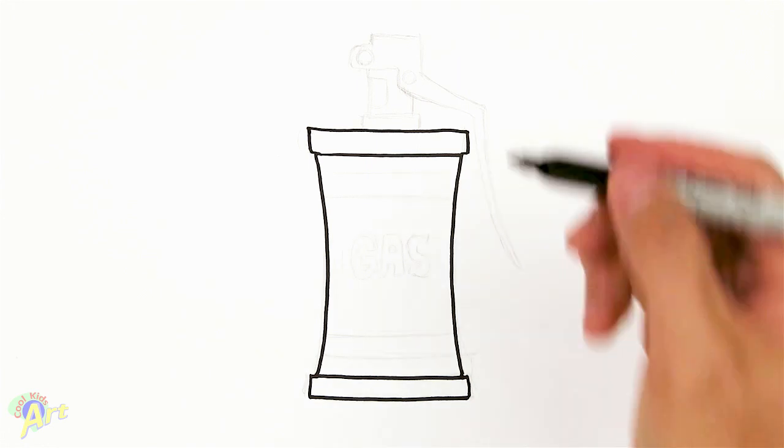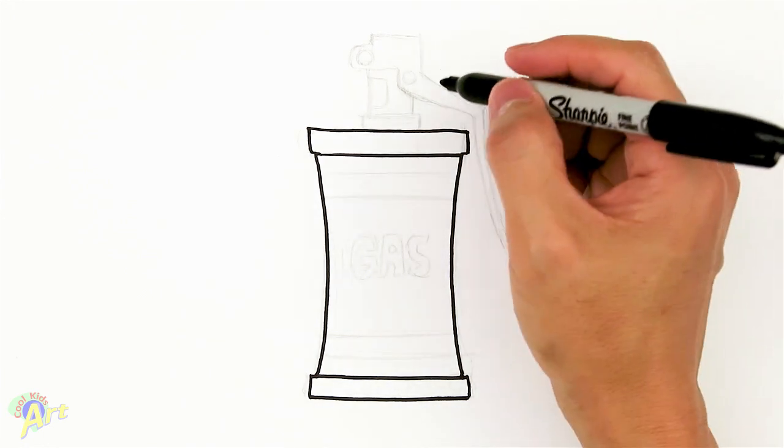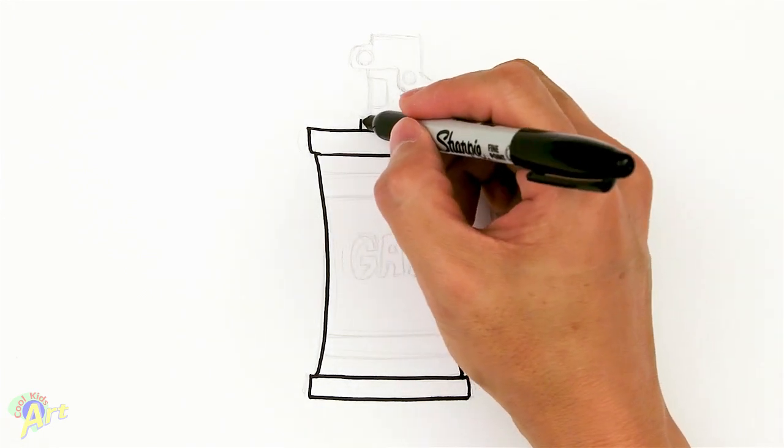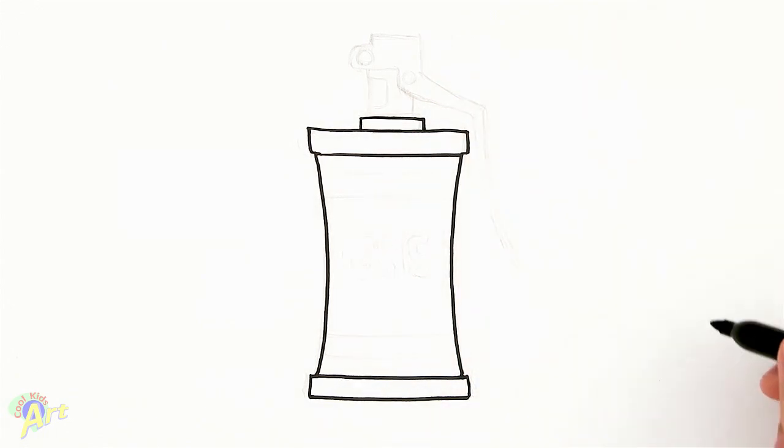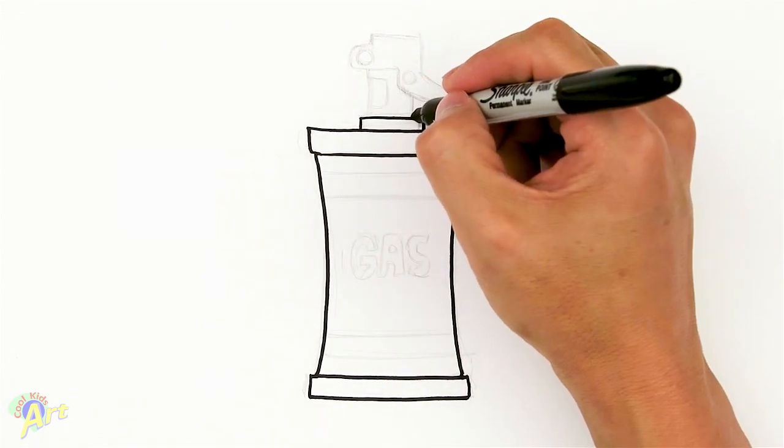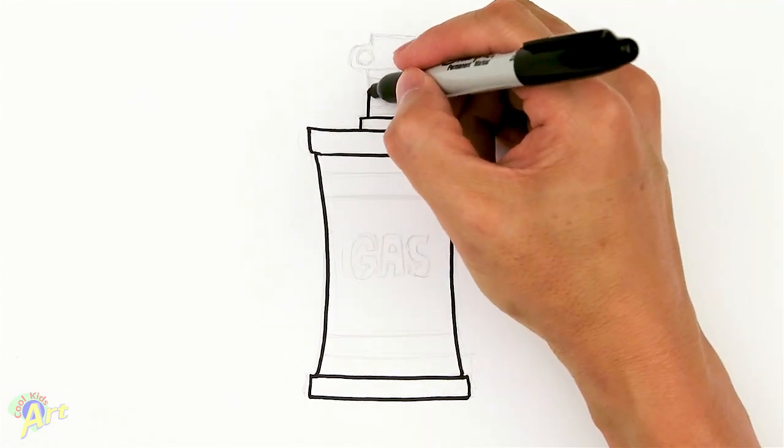Okay and then from here now we can draw in the upper part. So we just draw a little rectangle right in the middle. And then we're going to come up here. This one will come out a little bit and this one we're going to come up higher.